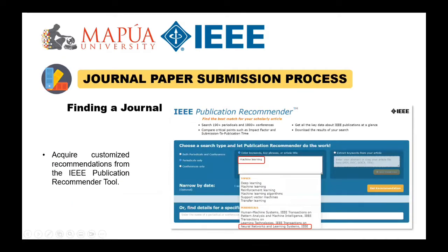To publish a research paper in an IEEE journal, you need to pick the correct journal the first time. The first step is to get a customized recommendation for your article from the IEEE publication recommender tool. IEEE publishes more than 150 journals, transactions, and letters on a wide range of technologies, so use the IEEE publication recommender to find the best journal for your work.